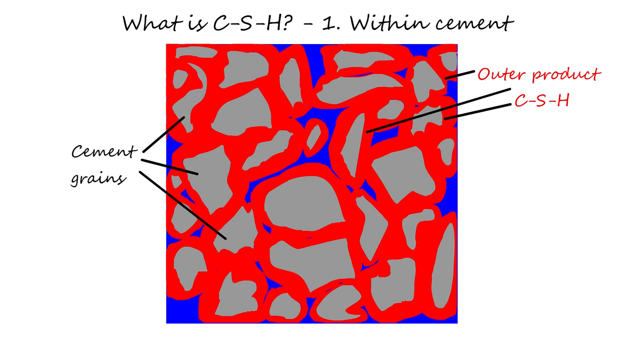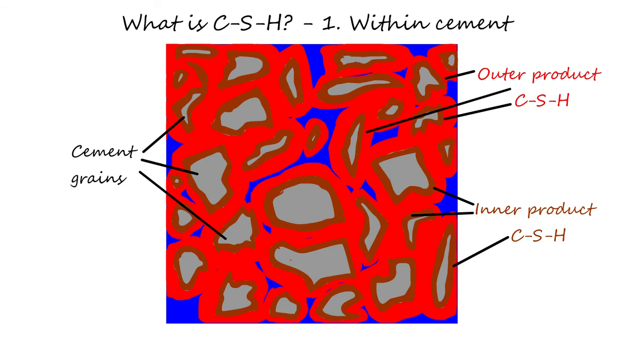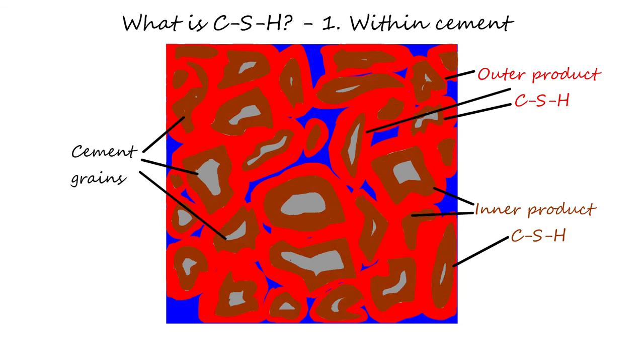This form of CSH is called outer product. A second form of CSH forms later, approximately at the former location of the cement grains. It is denser and referred to as the inner product. Due to the stoichiometry of the reaction, allied to CSH, crystalline Portlandite also precipitates in the pore space, which is not shown.